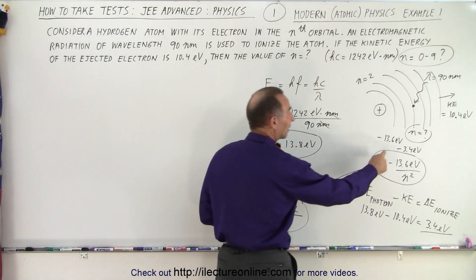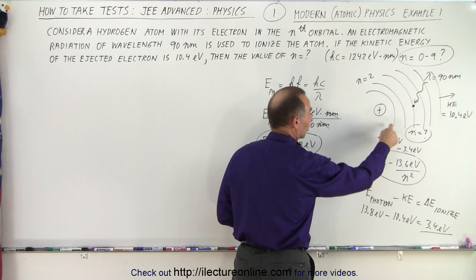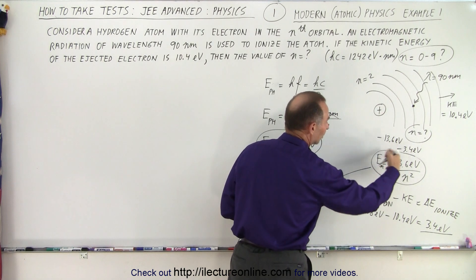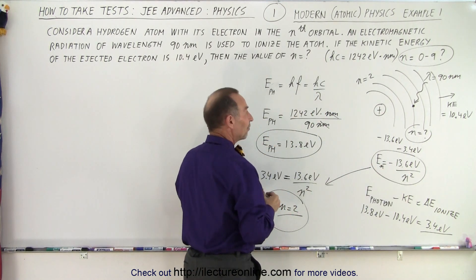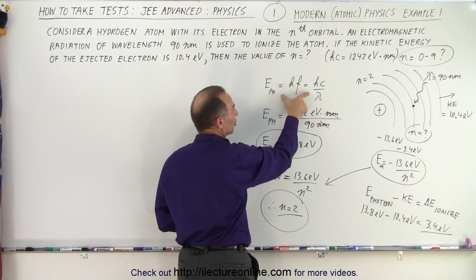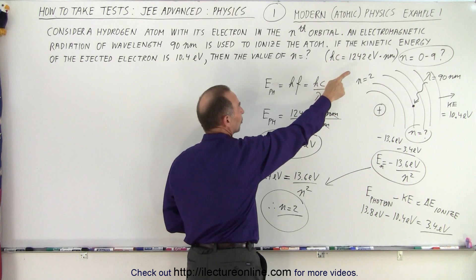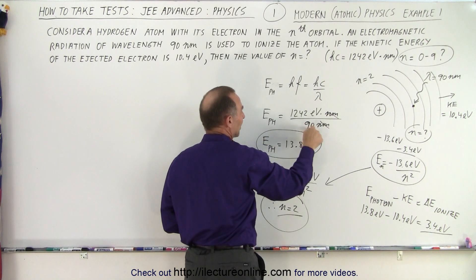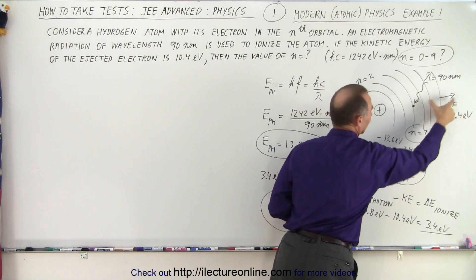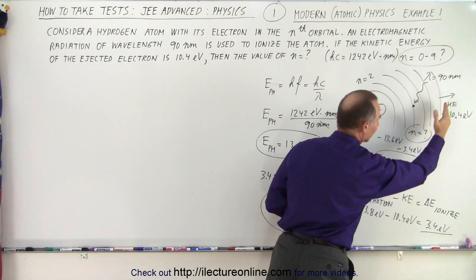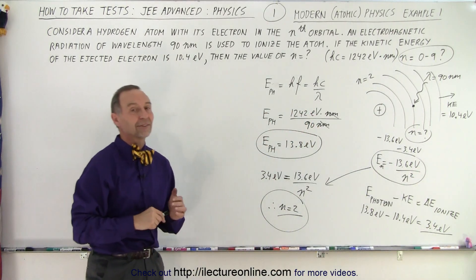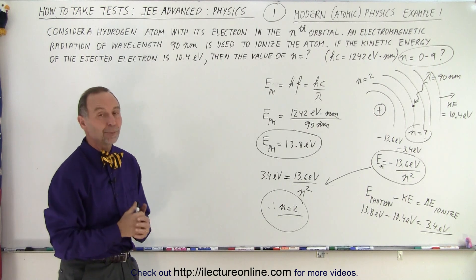It helps to know that the energy at the lowest level is minus 13.6 electron volts, that the energy of any orbital, e sub n, is equal to this equation, and the fact that a 90 nanometer photon comes in, you should be able to calculate the energy of that photon. They gave us hc in terms of nanometers and electron volts divided by 90. Quick calculation gives you the total energy of the photon, subtract from that the kinetic energy. The difference is the energy required to ionize the atom. If it's 3.4 electron volts, it must be in the second orbital, and that's how the problem is solved.